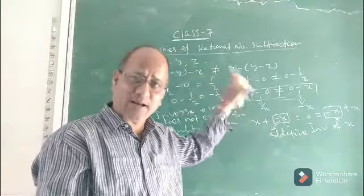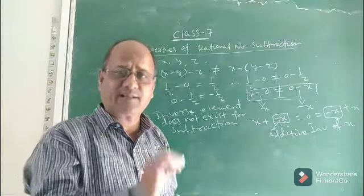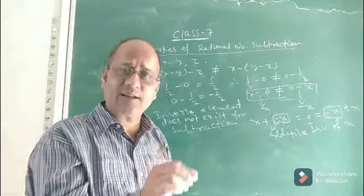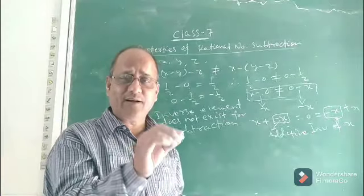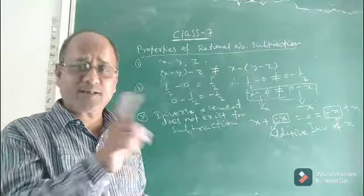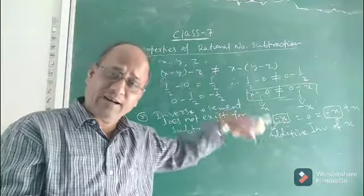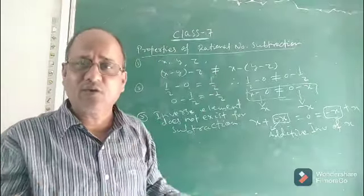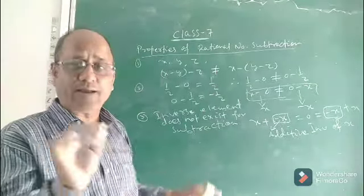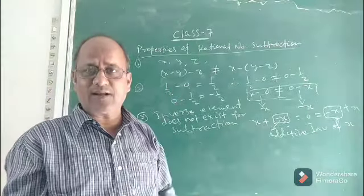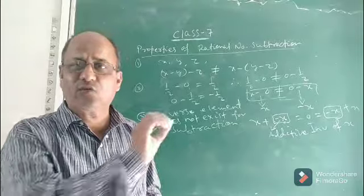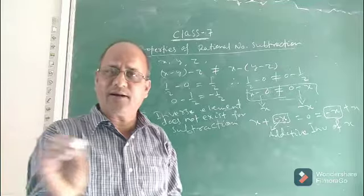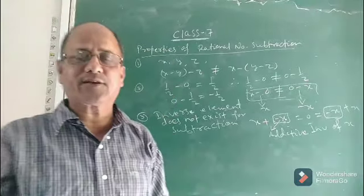Inverse does not exist because there is no identity. Where there is identity, there is inverse. In addition, there was the additive identity 0, and minus x was the additive inverse of any rational number x, because x plus minus x equals 0. But in subtraction of rational numbers, there is no identity element, and hence there is no inverse element.